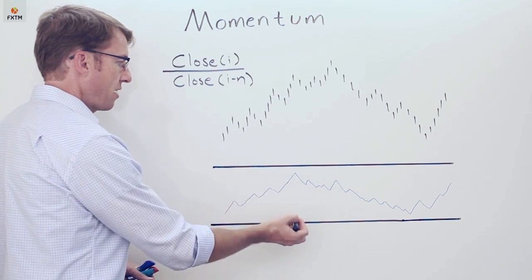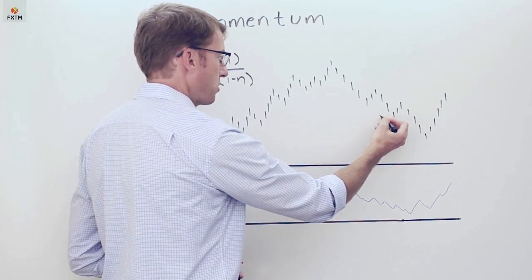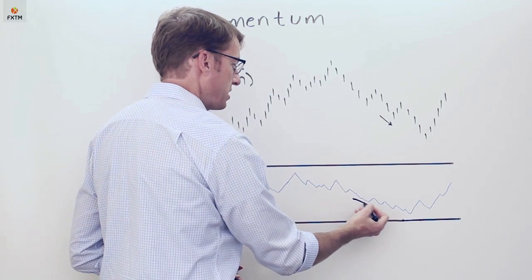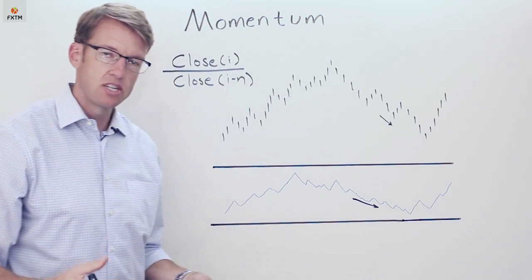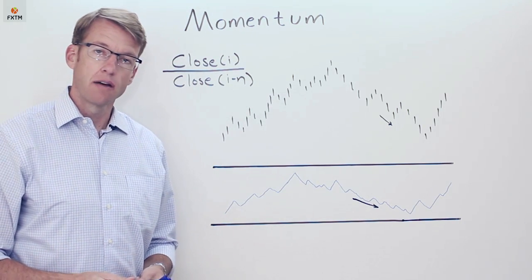That's what we would expect to see and in fact here I've drafted up an example of what the momentum oscillator looks like and as you can see as the price began to decline the momentum oscillator was also declining as it shows that relationship between the close price now versus the close price at the beginning of the look back period.